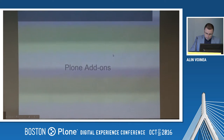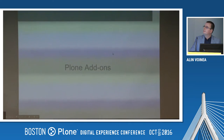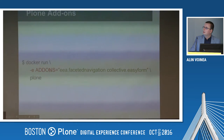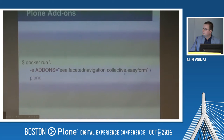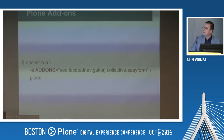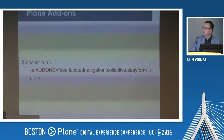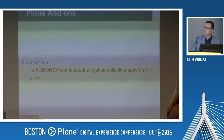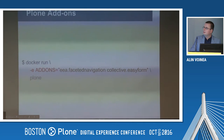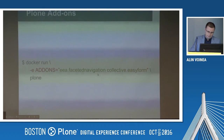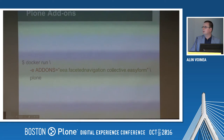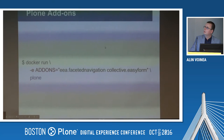So how do you test add-ons with this image? You can just add them as an environment variable with spaces in between. You can also specify a version — for example, if the fast navigation add-on is not released yet, this command will take the previous version, but if you put `1.0rc1` you will get that one.